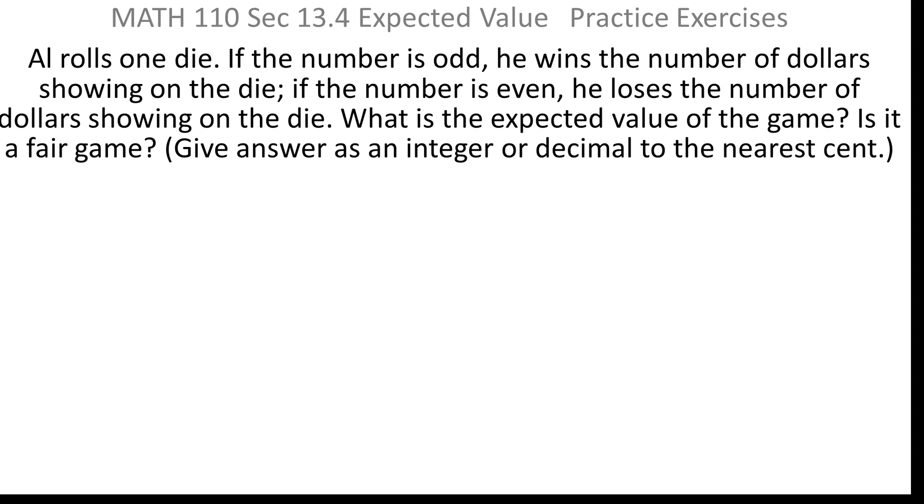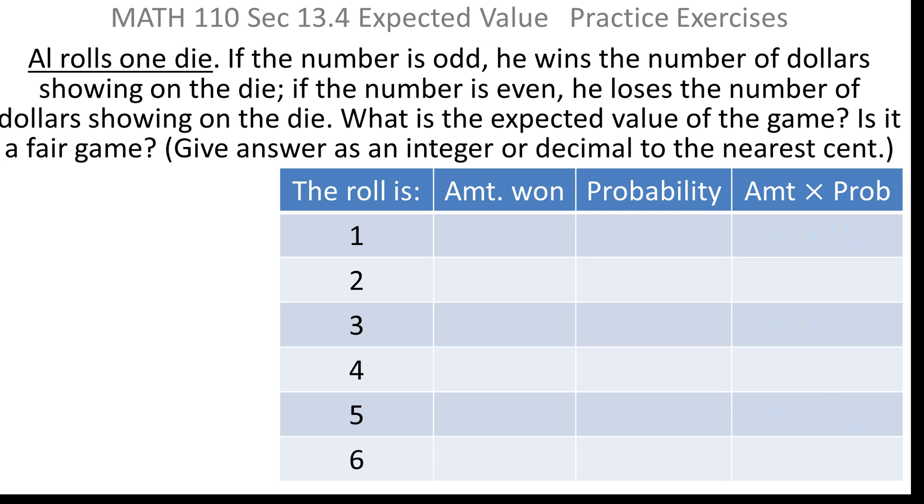Al rolls one die. If the number is odd, he wins the number of dollars showing on the die. If the number is even, he loses the number of dollars showing on the die. What is the expected value of the game, and is it a fair game? We want the answer either as an integer or a decimal to the nearest cent.